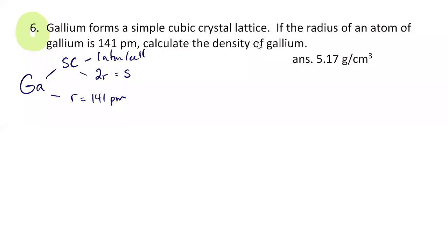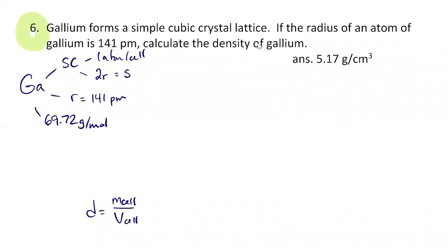From the periodic table, the molar mass of gallium is 69.72. We're trying to find the density of gallium, so density equals the mass of the cell divided by the volume of the cell — those are the two things we need to calculate.